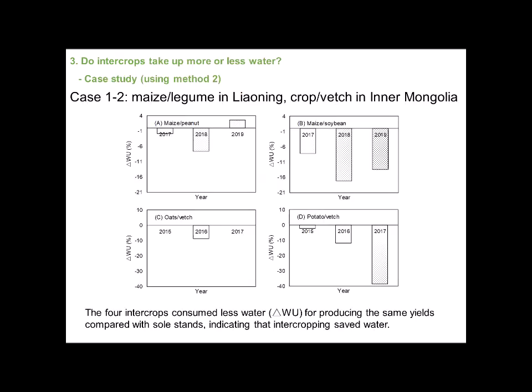Using method 2, we found that maize-peanut, maize-soybean, oat-vetch, and potato-vetch — these four intercropping systems consumed less water for producing the same yields compared with sole crops, indicating that intercropping saved water.